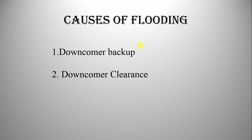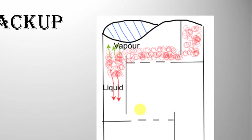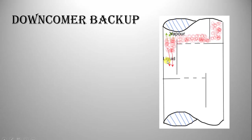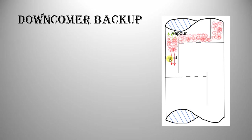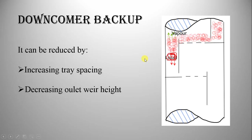The causes of flooding are downcomer backup and downcomer clearance. Coming to downcomer backup, the fluid on the tray is foam — that is, a mixture of vapor and liquid. The function of the tray is to mix the vapor and liquid together to form a foam. When it overflows from the weir, the foam separates back into liquid and vapor in the downcomer. If the foam cannot drain quickly from the downcomer onto the tray below, then foamy liquid will back up onto the tray above, causing flooding. Downcomer backup can be reduced by increasing the tray spacing and decreasing the outlet weir height.